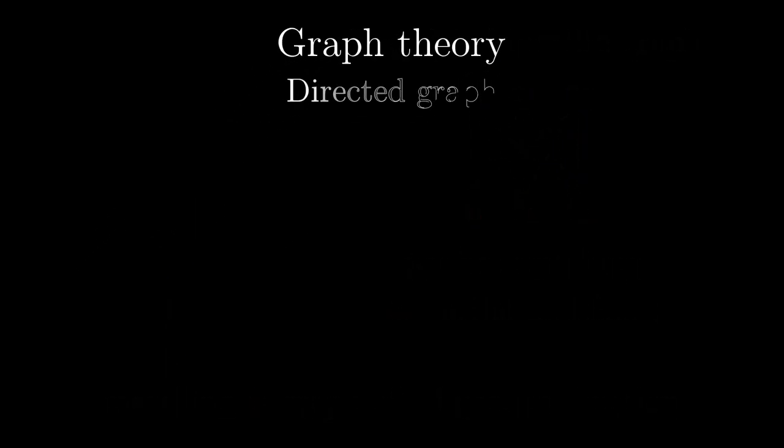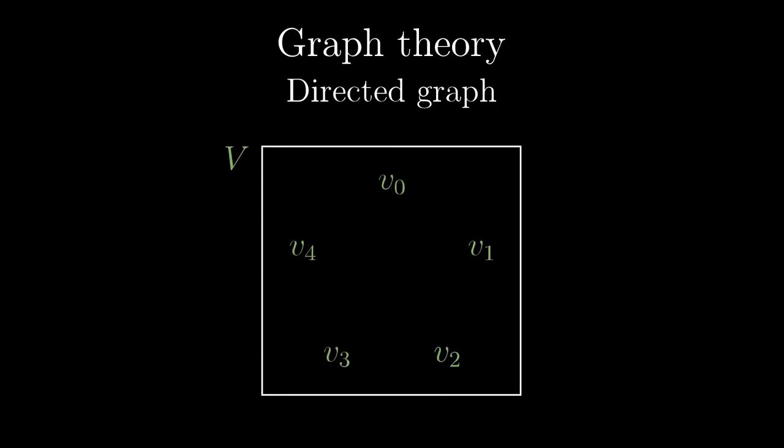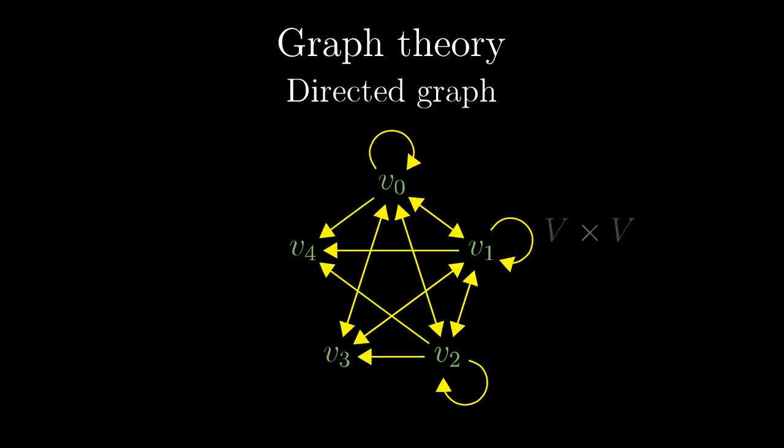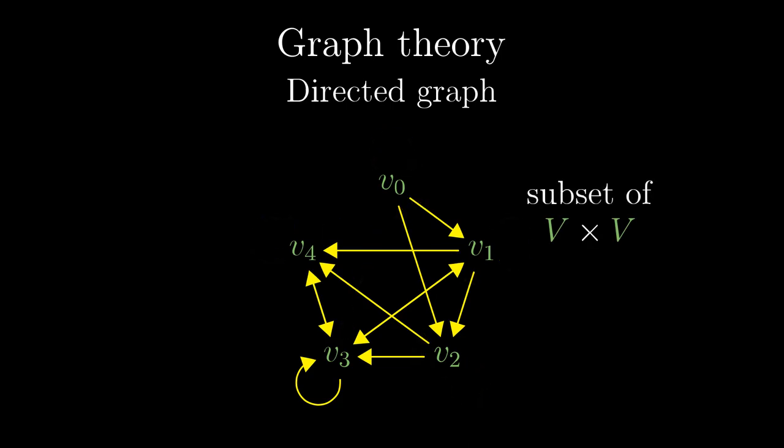Another graph theoretical object, closely related to the Cartesian product, is a directed graph. In this case, we start with a single set of vertices V, and we take a Cartesian product V times V. A single directed pair of vertices, say V3, V1, is then represented as an arrow from the first vertex to the second one. The entire Cartesian product looks like this. A subset of the Cartesian product then corresponds to an arbitrary directed graph.